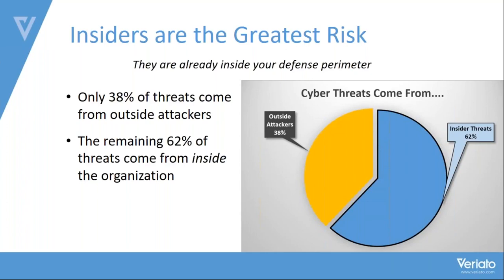Insiders don't have to compromise the security system the way an outsider does. An outsider has to start from scratch and figure out how to break in. All an insider has to do is log in and they're inside your computer. For example, a payroll employee who regularly accesses employee names, addresses, Social Security numbers, and income levels has sensitive information that, if compromised, can be detrimental to the organization.